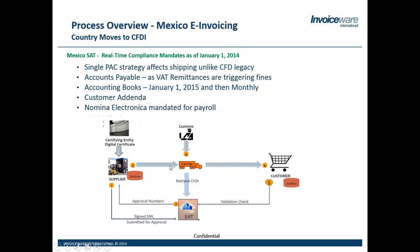Mexico: I've always talked about a single-PAC strategy being an issue because unlike Brazil, Chile, or Argentina, there's no contingency — no fallback paper process. While the law states you can ship with a carta porte, which is a third-party logistics invoice, many customers want the e-factura on the truck. We always recommend a multi-PAC strategy because these PACs can be overwhelmed — they could have 40, 50, 100,000 customers and do only a few million dollars a year in revenue, making it difficult to maintain business.